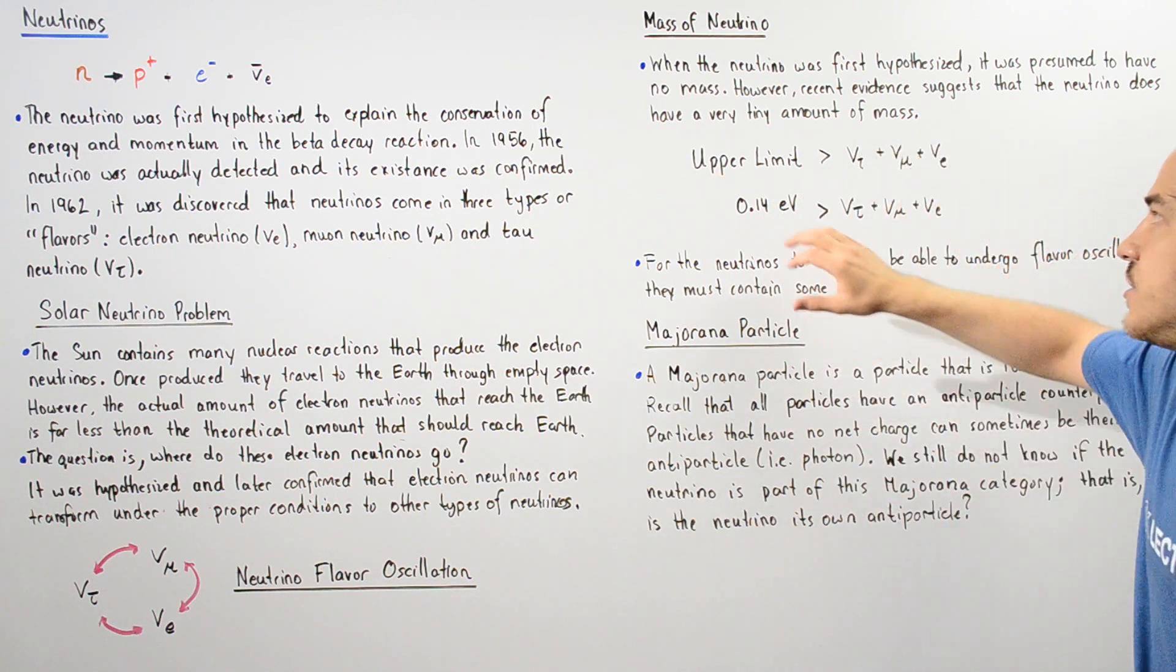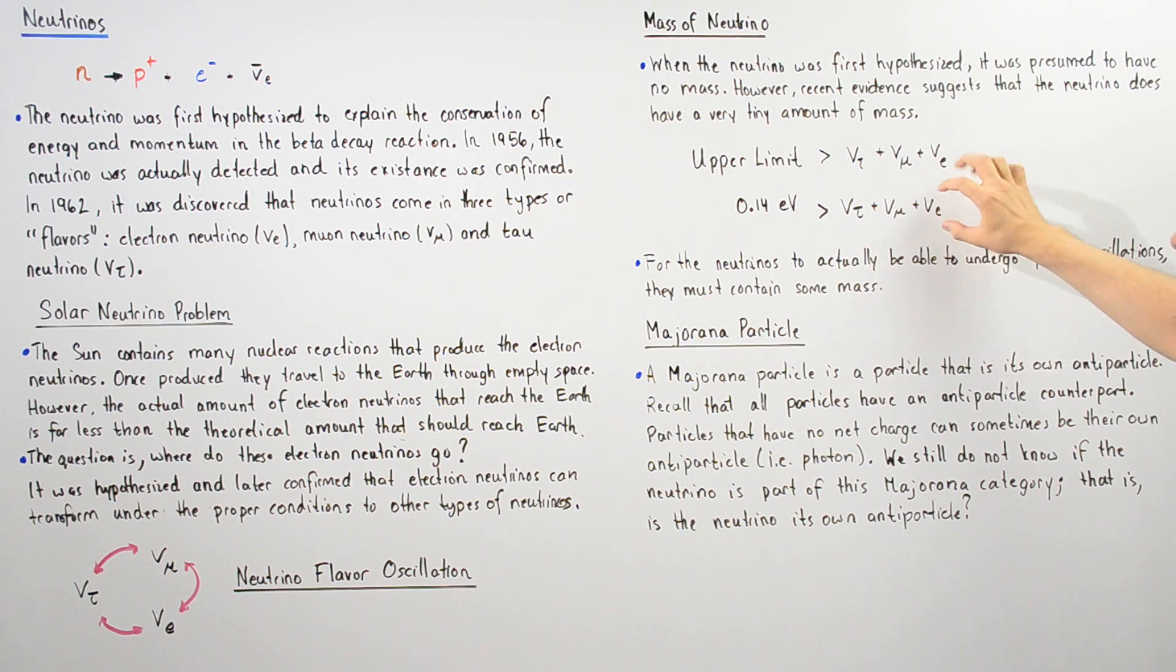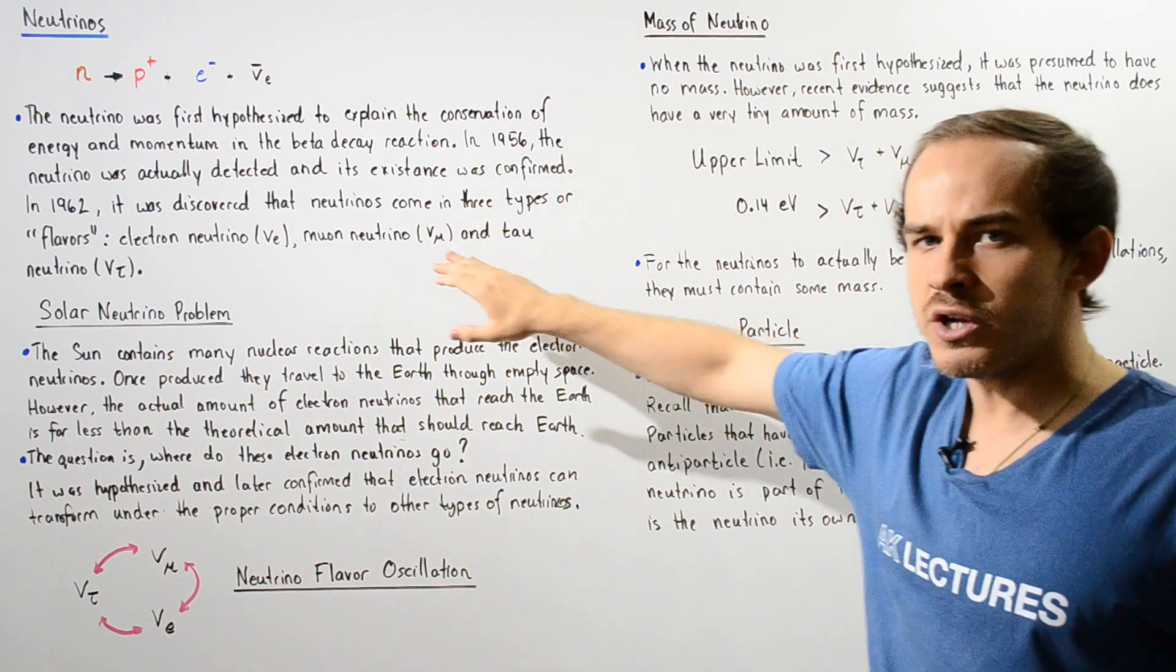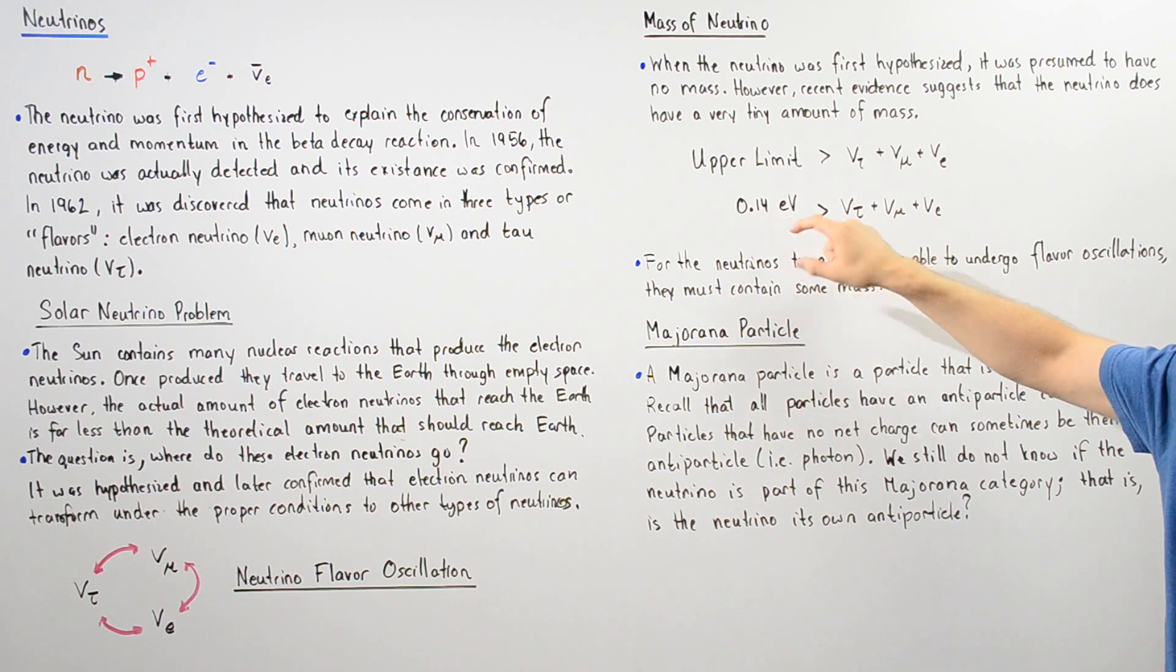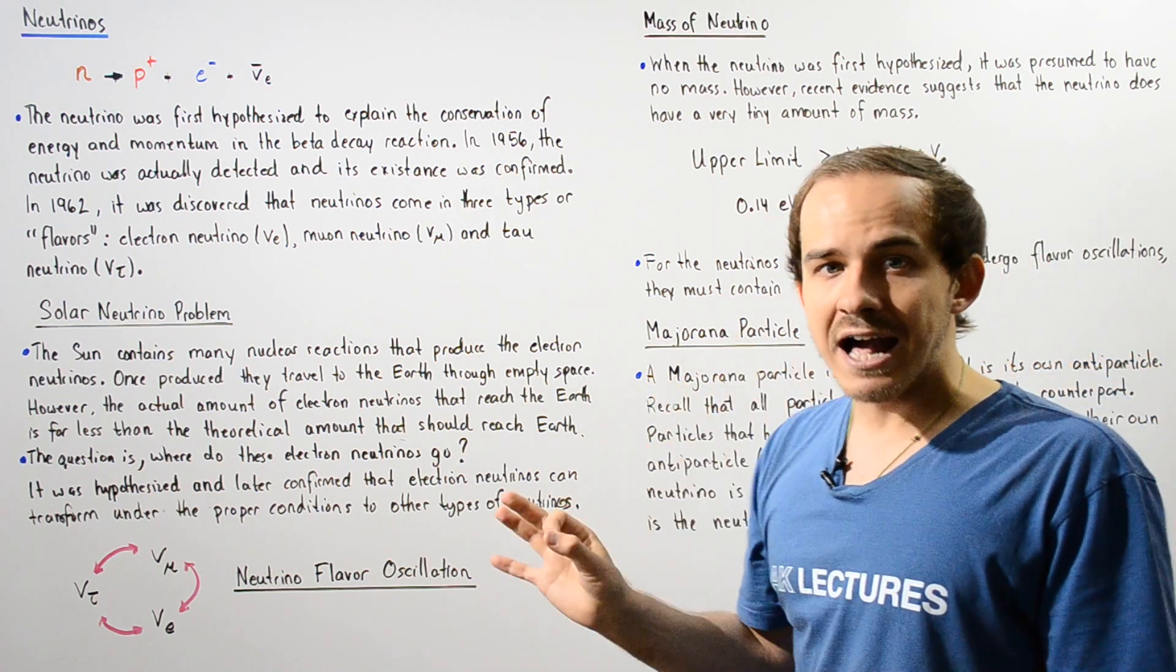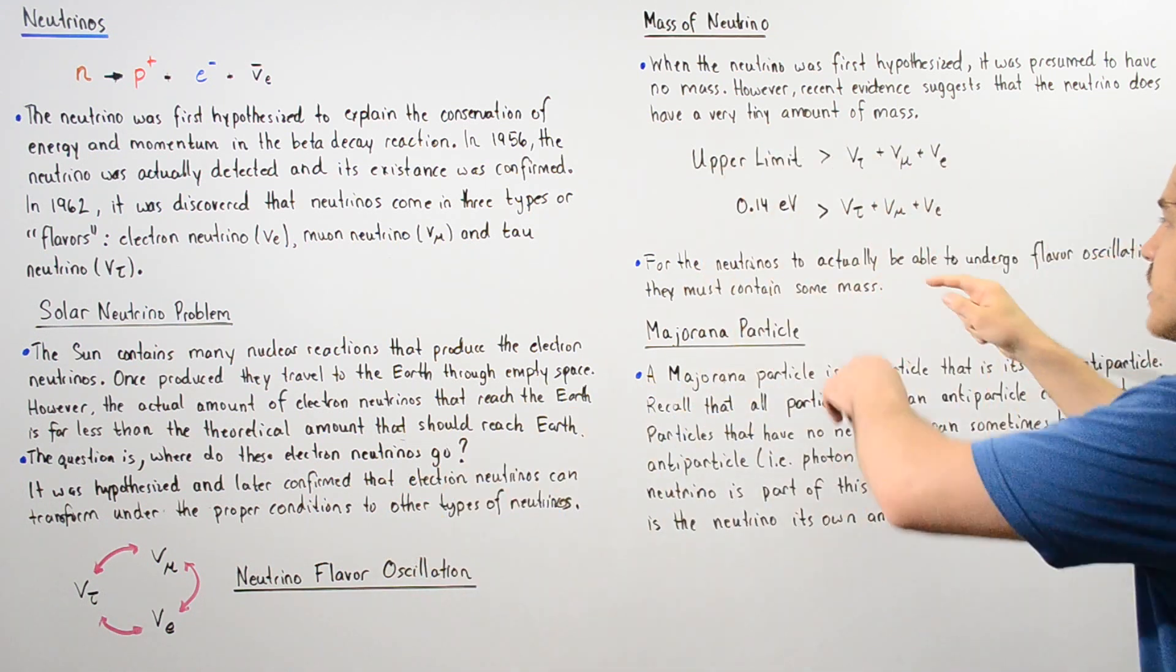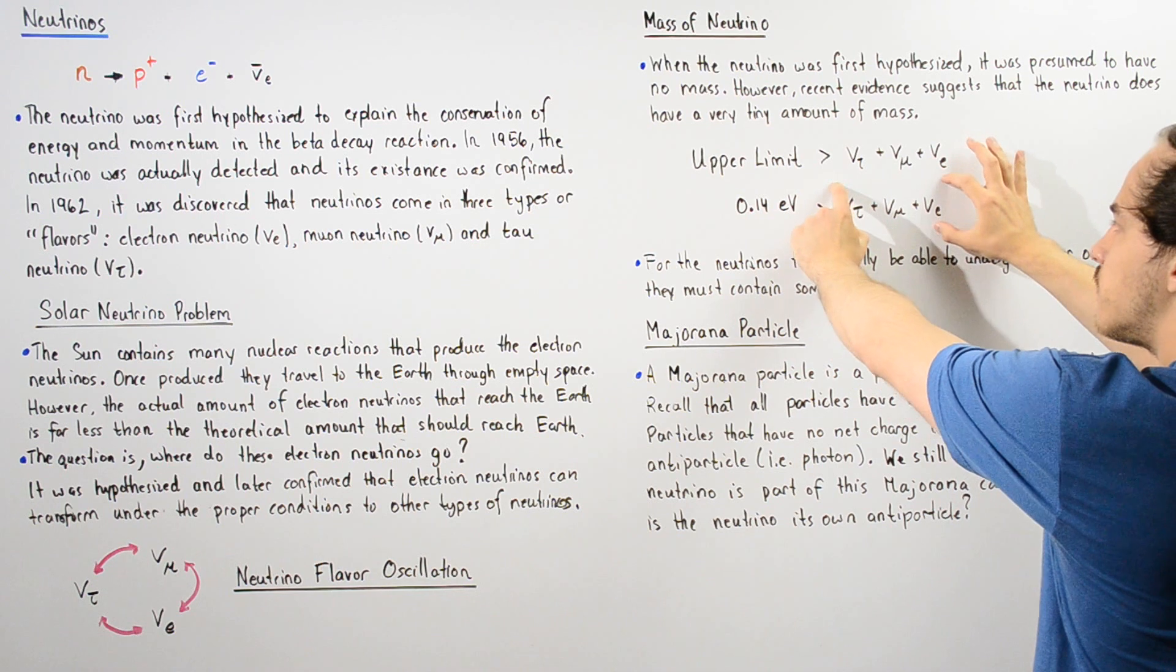This is an extremely small value. And this means that if we take the sum of these three neutrinos, the sum of their masses, the sum cannot exceed 0.14 electron volts.